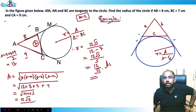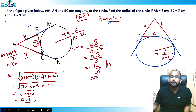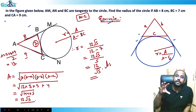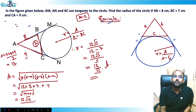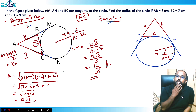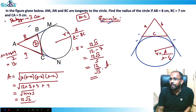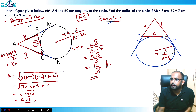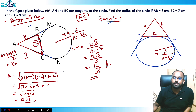Both methods give the same answer. Method 1 involved breaking the pentagon into three triangles using the 'sum of parts equals total' principle. Method 2 used the excircle formula directly: r = Area / (s − side to which it is tangent). Both are important concepts to know.